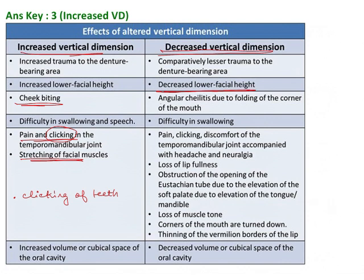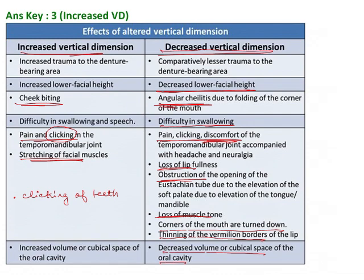For decreased vertical dimension, the key features to remember are: decreased lower facial height, angular cheilitis, difficulty in swallowing, pain, and discomfort. You might think discomfort also appears here, but decreased VD was not among the given options, so increased VD remains the best answer. Other features of reduced vertical dimension include: loss of fullness, loss of muscle tone, downturned corners of mouth, thinning of the vermilion border, and decreased volume of the oral cavity.